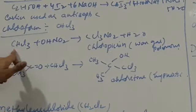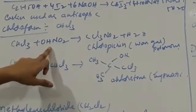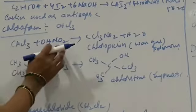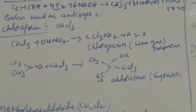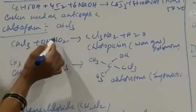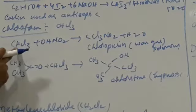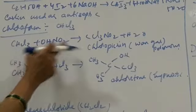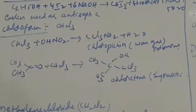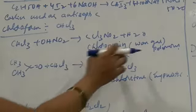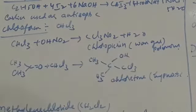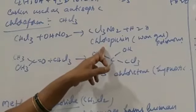For example, when chloroform is treated with nitric acid (HNO3), it forms chloropicrin. Chloropicrin is a poisonous liquid and it is used as a warfare gas, used in times of war. It is also used as an insecticide. So chloroform is used in the preparation of chloropicrin.